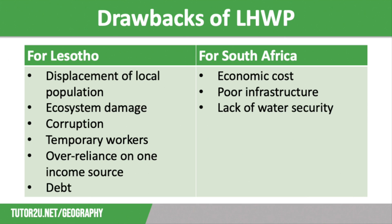Lesotho is also over-reliant on a single income source: 75 percent of its income comes from transferring water to South Africa, making it economically vulnerable. Additionally, Lesotho borrowed huge sums of money to finance its part of the project, and this debt must be repaid with interest, reducing funds available for vital services such as education and healthcare.